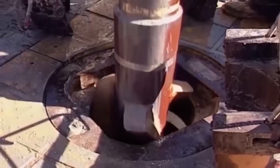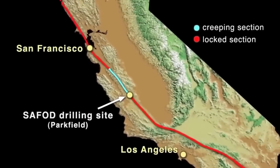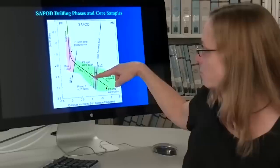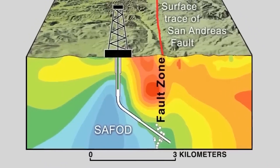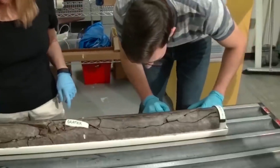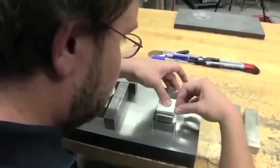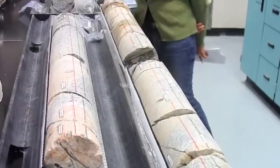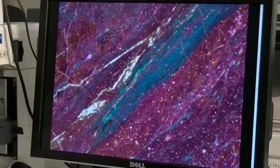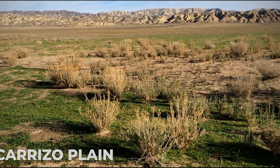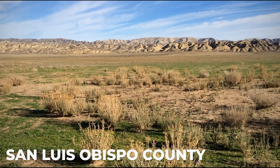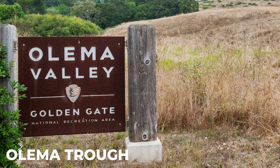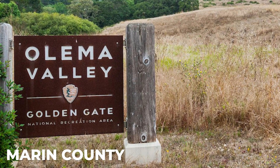The fracturing of the rock causes waves to propagate in all directions, and it is these waves that humans experience as earthquakes. The fault can be seen as a sequence of scarps and pressure ridges in numerous locations, such as the Carrizo Plain, which is located in San Luis Obispo County, and the Olima Trough, which is located in Marin County.